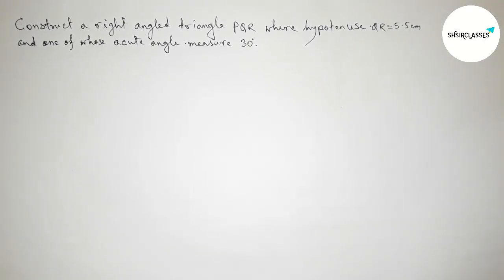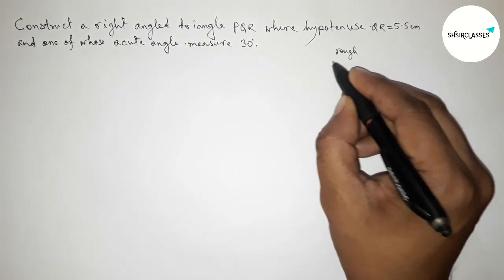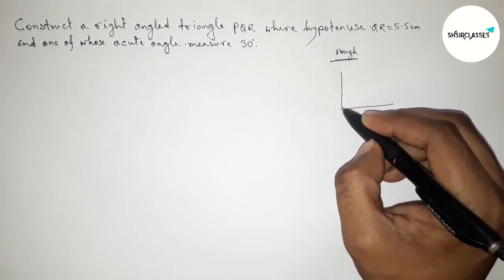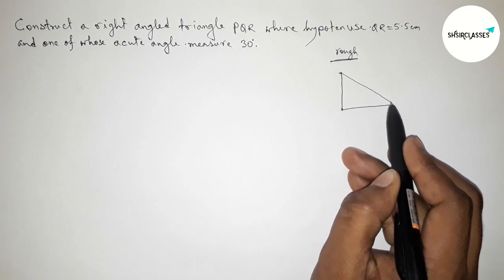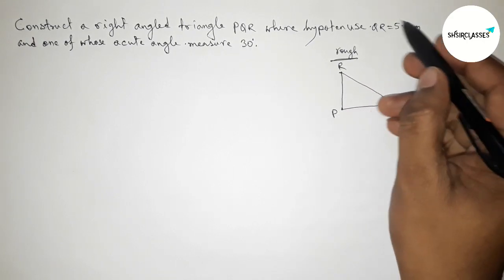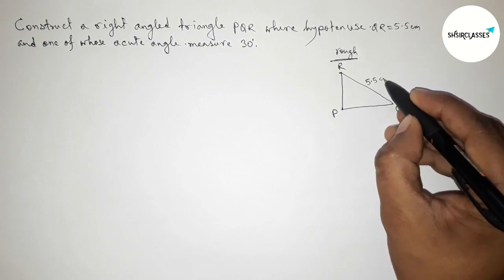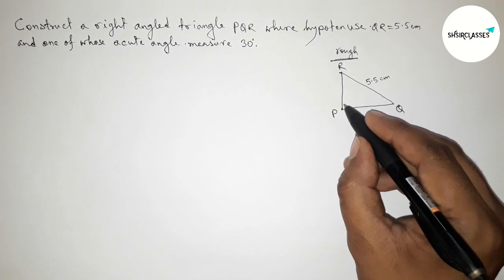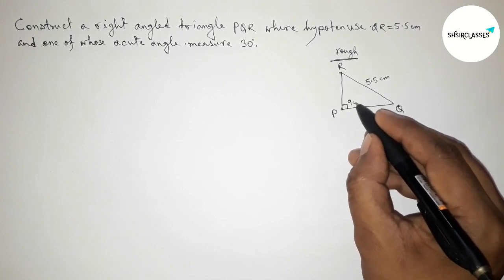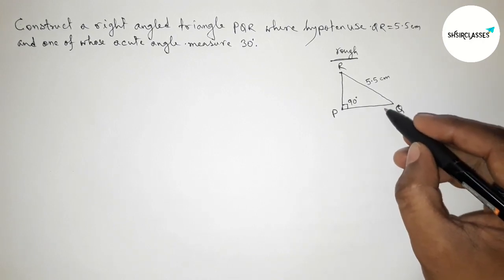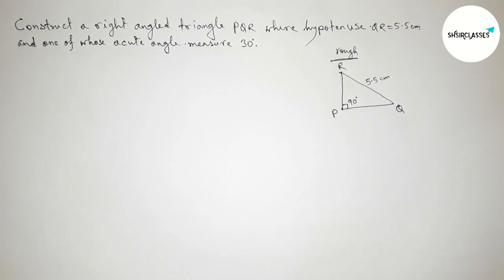First of all, roughly discussing some important calculations here. Drawing a right angle triangle roughly — taking point Q here, R here, and P here. Given: the hypotenuse QR equals 5.5 centimeters. We know that the angle opposite to the hypotenuse of a right angle triangle is always 90 degrees. Also given: one of the acute angles is 30 degrees, so we can take angle Q or angle R as 30 degrees.